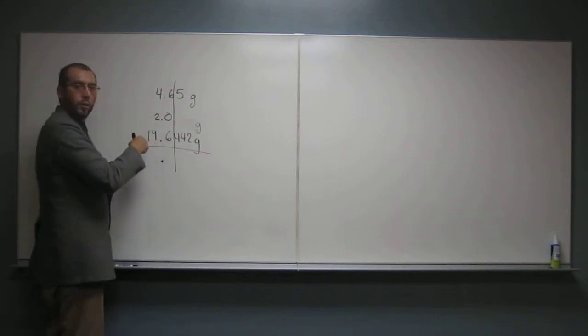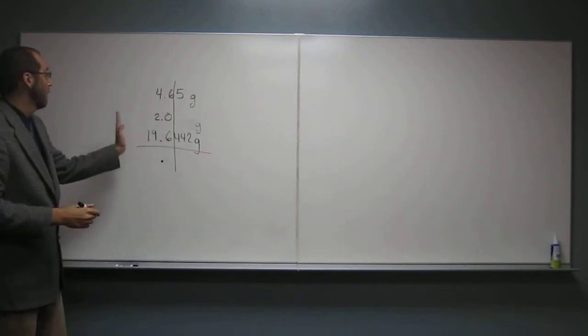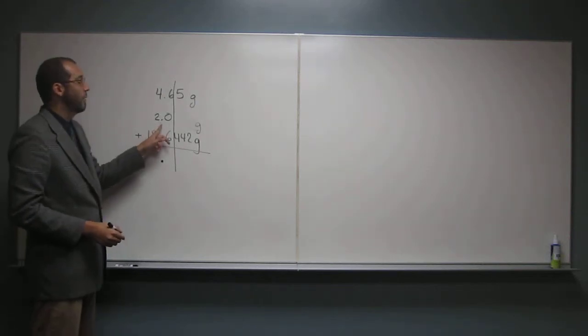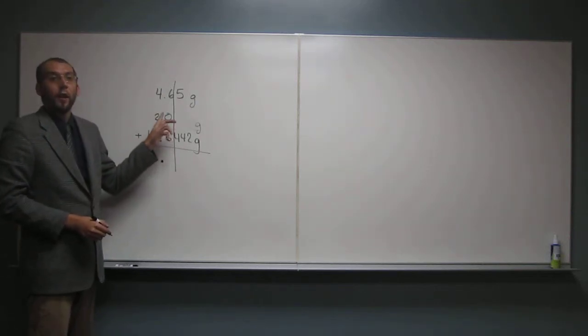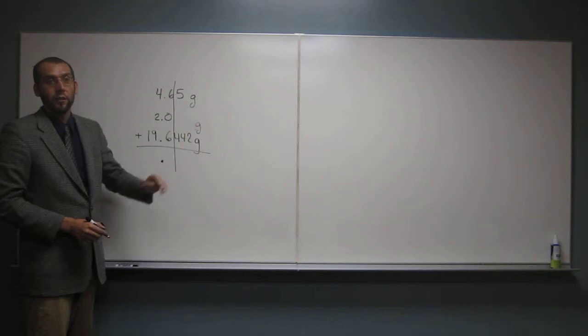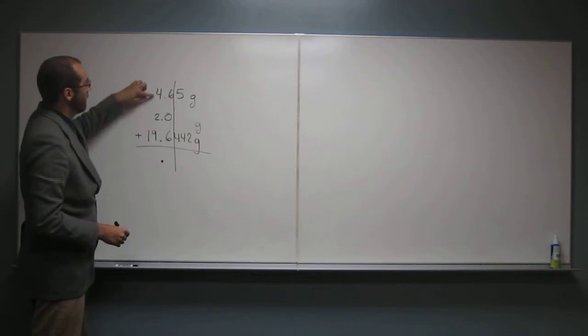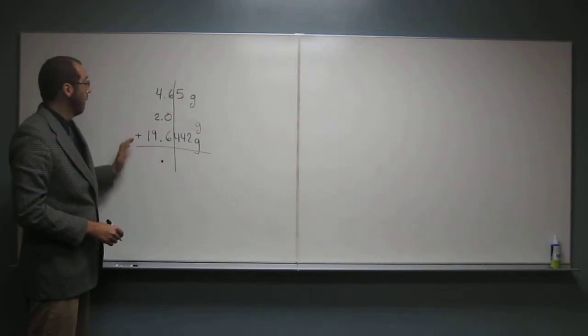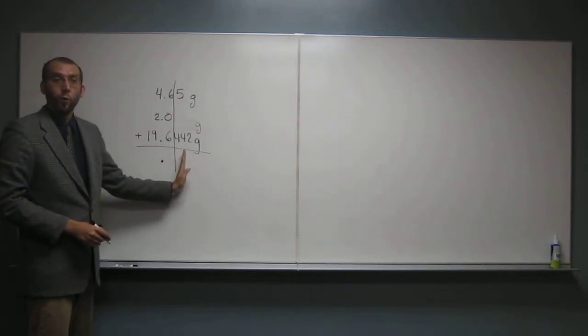So remember, we cut it off to the one with the, if we're adding or subtracting, and in this case we're adding, we want to cut it off to the number that has the least numbers after the decimal place. So if we look at this, this has 2 after the decimal place, this has 1, this has 4. So the final answer is just going to have 1.